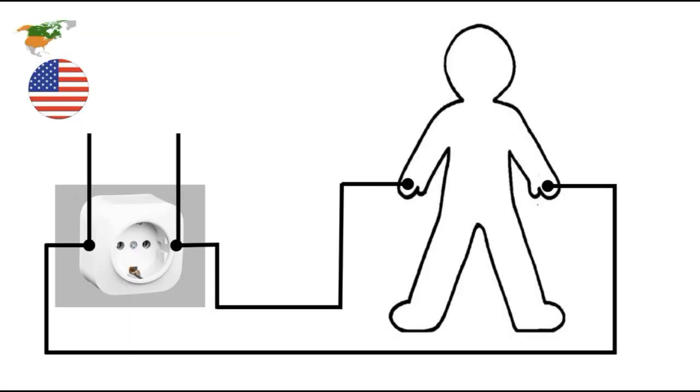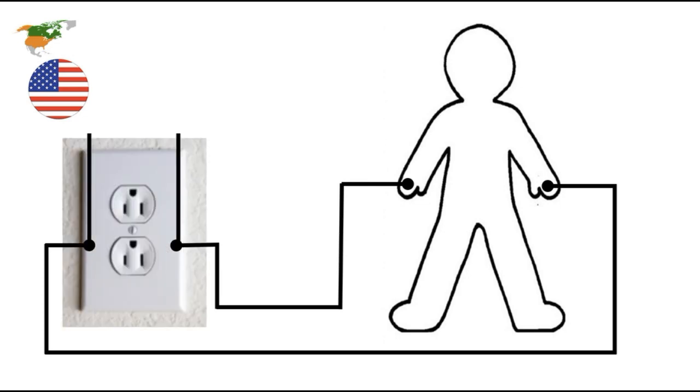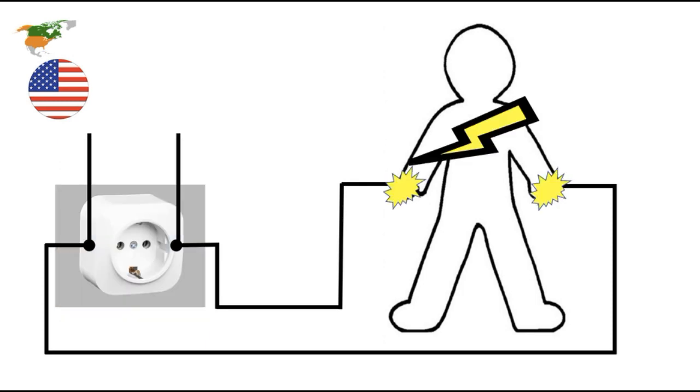Here's how probably an average person pictures someone getting shocked by electricity. Notice the two different outlets, depending on where you live. They picture a person grabbing two wires, hot and neutral, either coming out of the wall outlet or just wires sticking out of the wall and getting zapped.